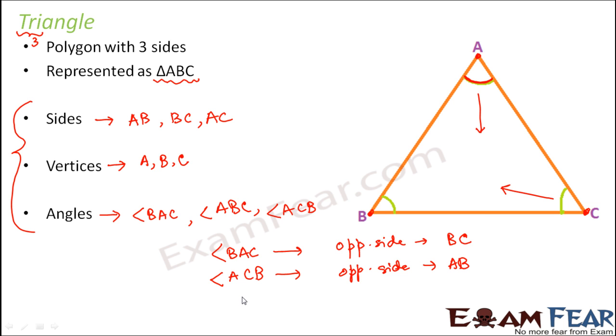Similarly if you take example of any side, let's say if you talk about side AC. For AC, which is the opposite angle? So the opposite angle would be this angle. So for AC, the opposite angle would be angle ABC. Similarly for AB, which one would be the opposite angle? So the opposite angle would be angle ACB.